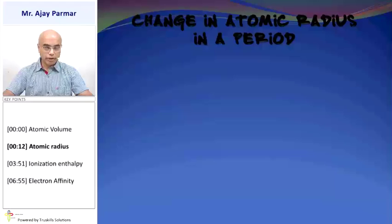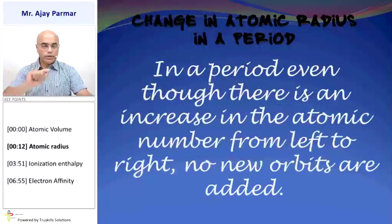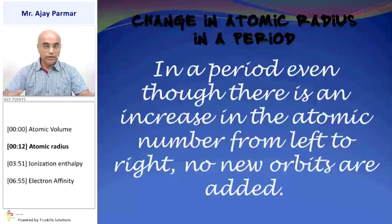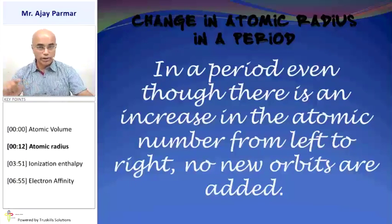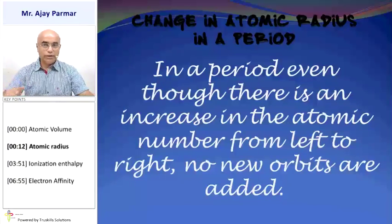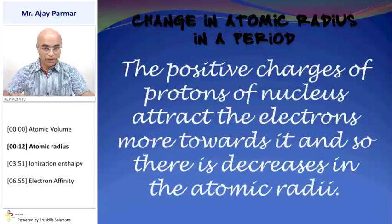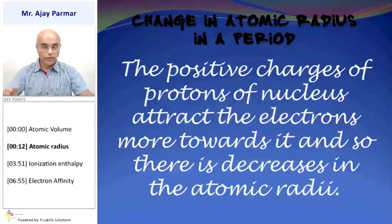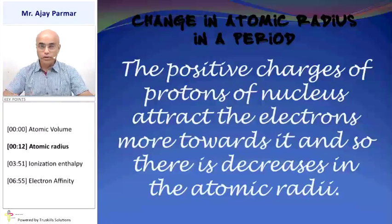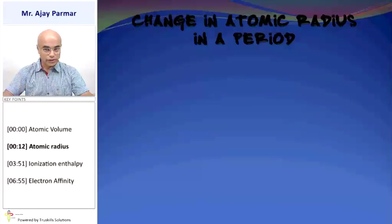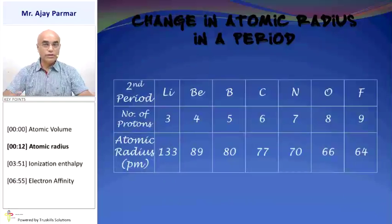How does it change in a given period? In a given period, the two adjoining atoms have no new orbit being added. But the number of protons will increase because for two adjoining members of a given period, the atomic number increases by one. Because of that, the positive charges of the proton inside the nucleus of the adjoining atoms in a given period would be different. So as you move from left to right, the number of protons in the nucleus increases, and that causes the decrease in the atomic radius.